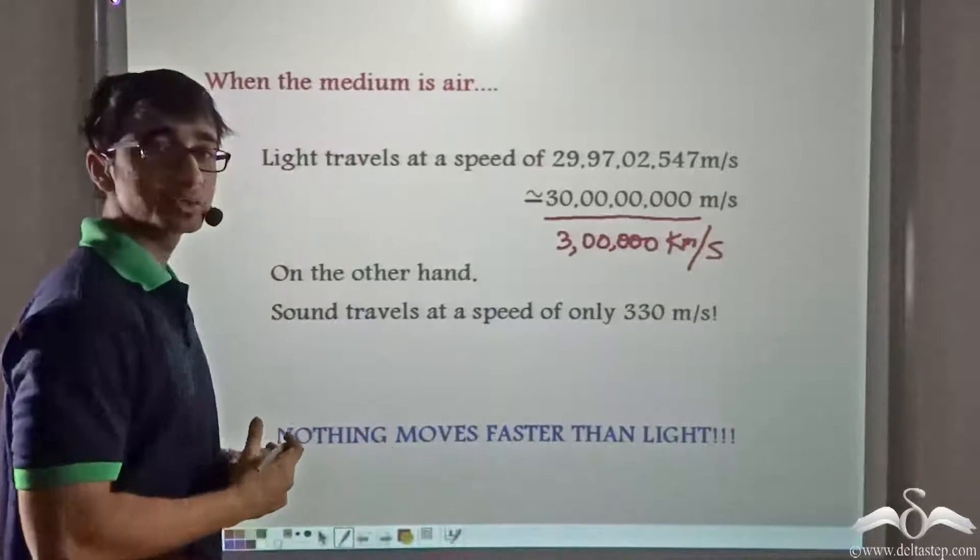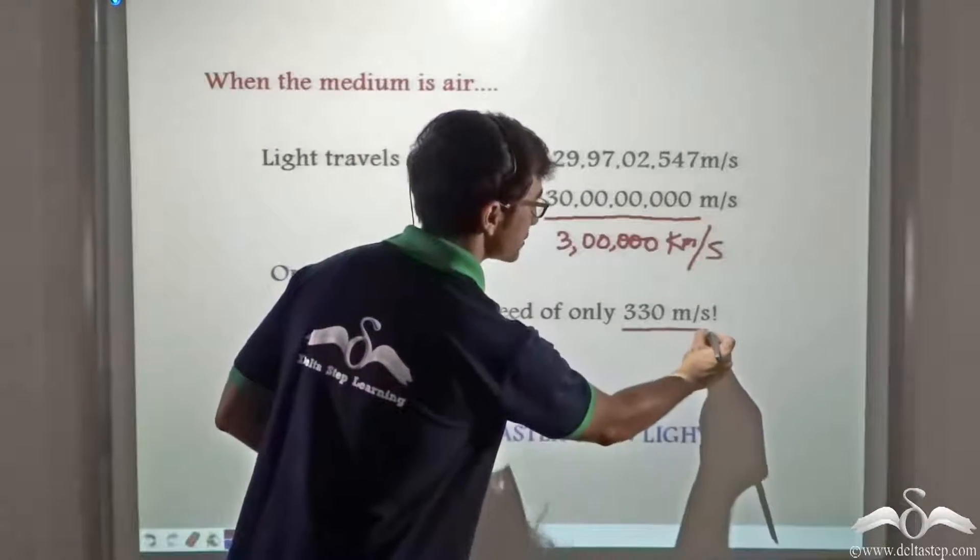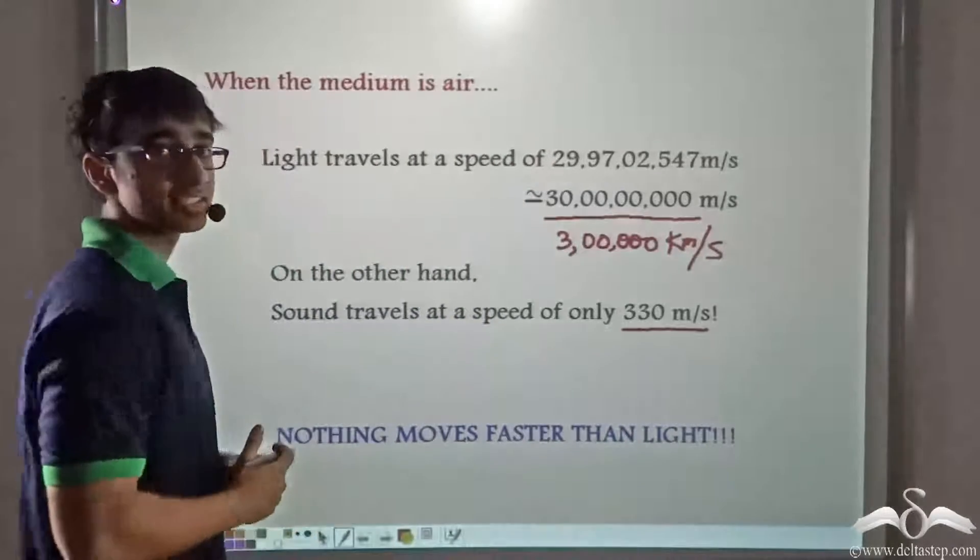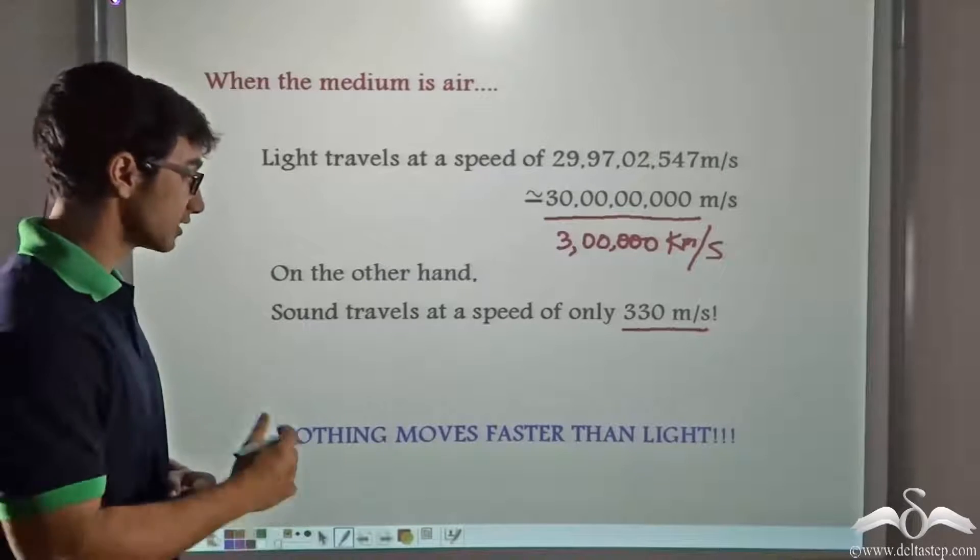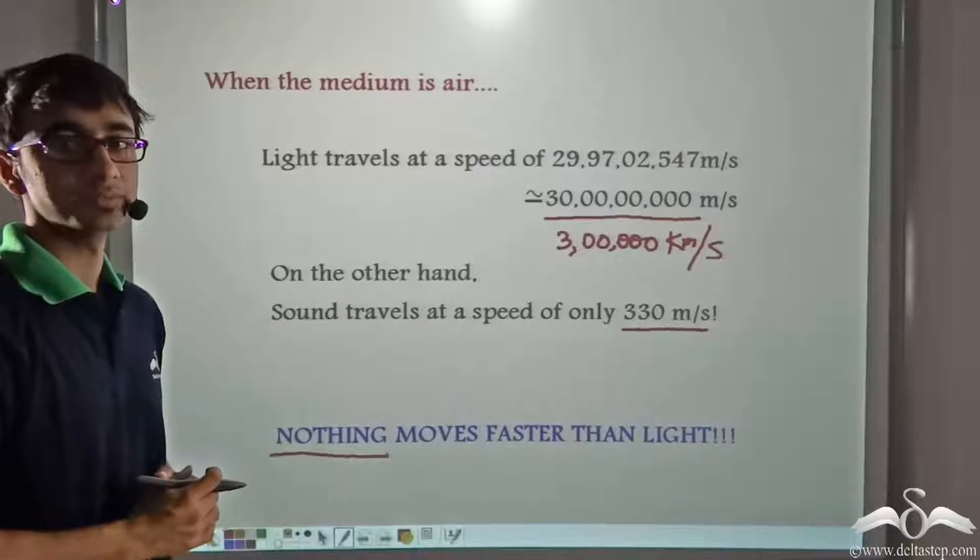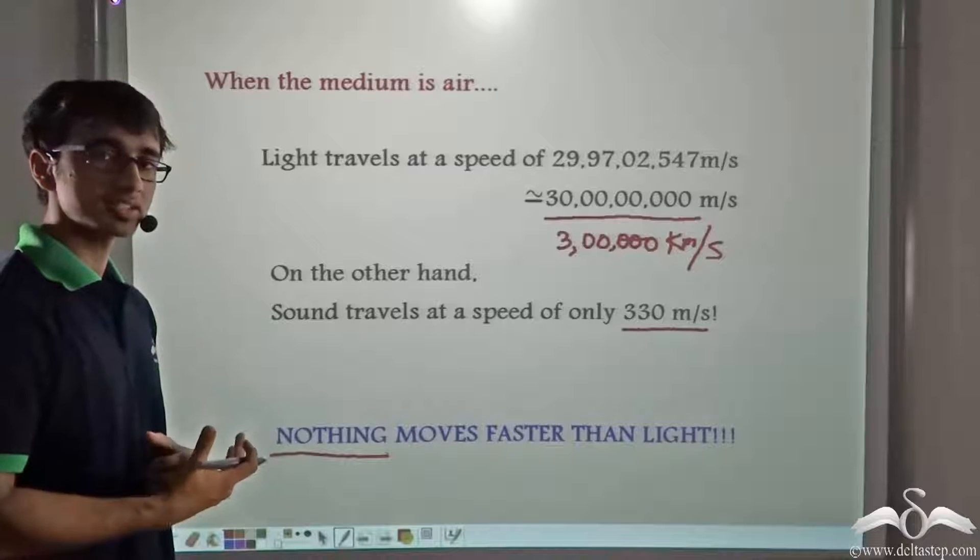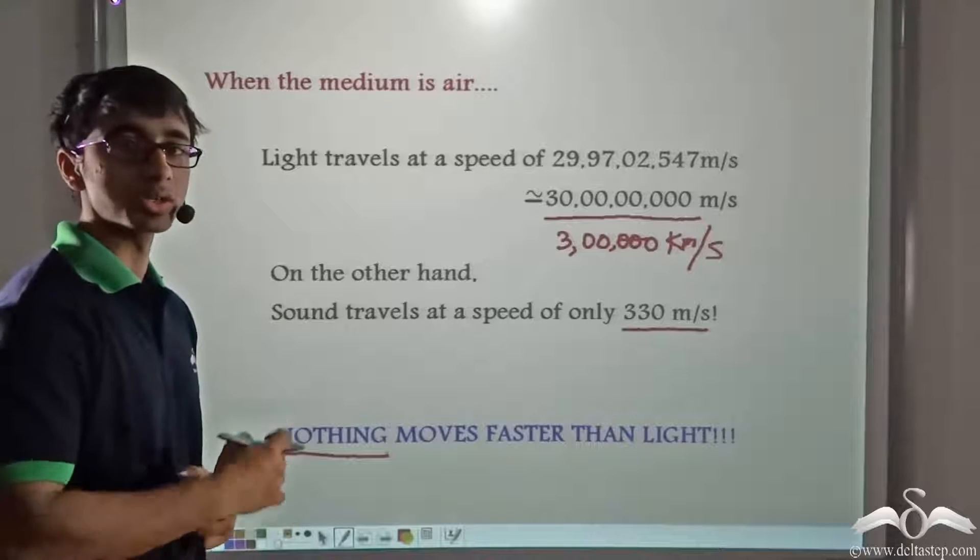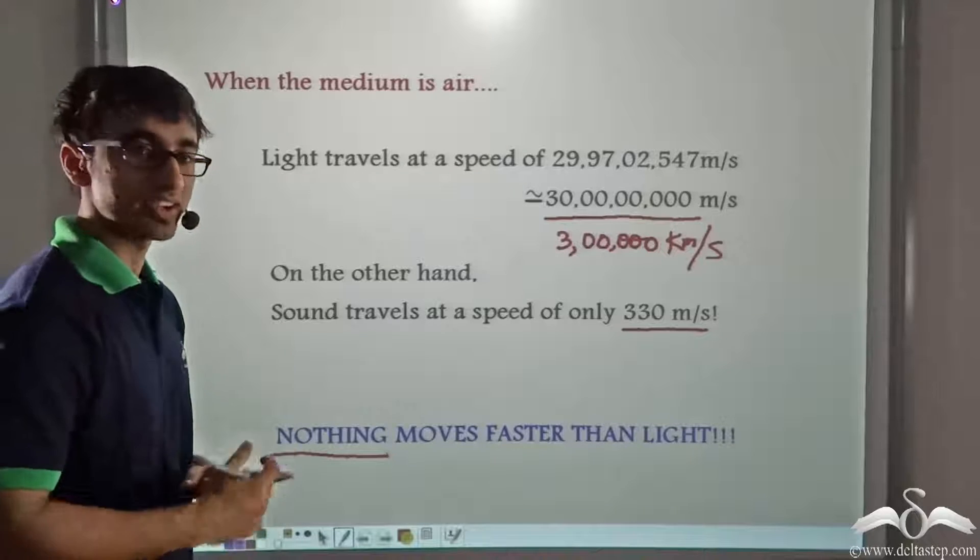Whereas the speed of sound is a mere 330 meters per second. So there is a vast difference between their two speeds. Nothing in the world or nothing in this universe moves faster than light. So now you must be wondering how much fast is light as compared to sound. How do we compare these two speeds? Let us find out.